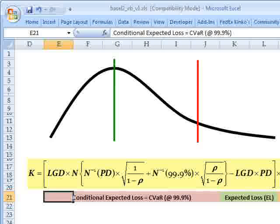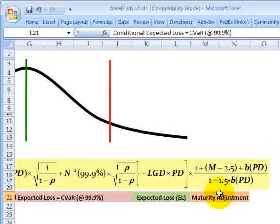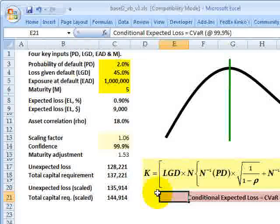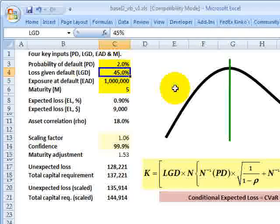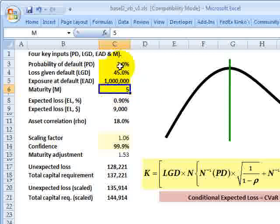And then there is also, if I go over to the right, a maturity adjustment. So the maturity of the exposure matters. The longer the maturity, the greater the risk and the more the capital charge. So finally, here's the spreadsheet uploaded to the member page. If you'd like to take a look at the formula in action, you can see in yellow, it takes the probability of default as an input, the loss given default as an input, the exposure at default as an input, and the maturity. So those are the four inputs.